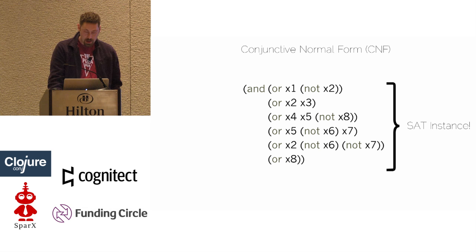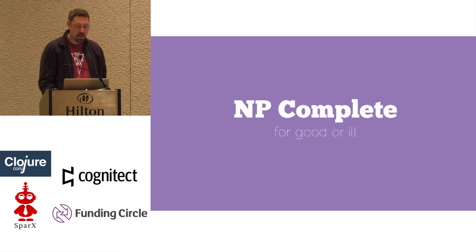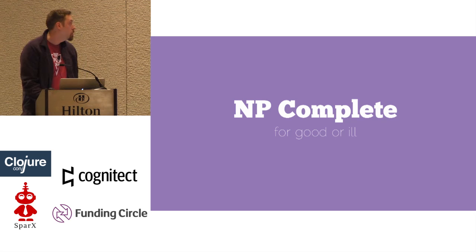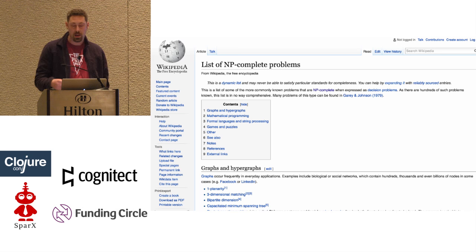At this point I legally have to tell you that this is an NP-complete problem, which usually sends us running. But I'm going to make the case that this is actually a good thing, because there are a ton of other NP-complete problems that we can map back to SAT, and SAT becomes a target for those things. SAT solvers get highly engineered and very well tuned, and if we can get our problem over to SAT, I think we're in good shape. We've already seen circuit satisfiability.